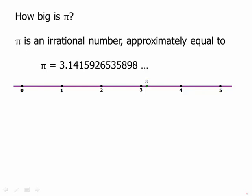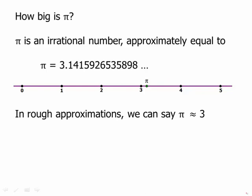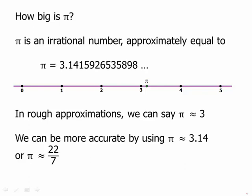If we locate pi on the number line, notice it's very close to 3. It's between 3 and 4, relatively close to 3. In very rough approximations, we can simply approximate pi as 3. If we need a slightly better approximation, we can use 3.14 or 22 over 7. That's actually a very useful approximation for pi.